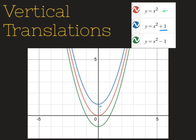As for the green parabola, you can see now I have a minus one. That minus sign is telling me I took my parabola and moved it down one.